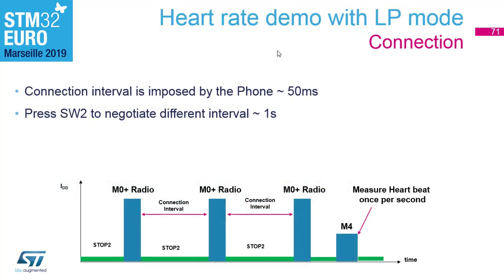That was advertising — now let's look at connection. The connection parameters are imposed by the phone, so the phone decides the connection interval. Most phones select an interval of about 50 milliseconds, which is quite high for this type of application. If we send the heart rate value once per second, then most of the connection events in between are just zero-length packets to keep the connection alive.